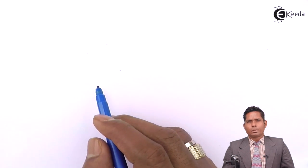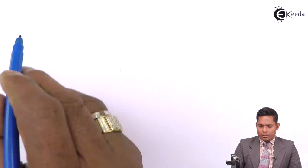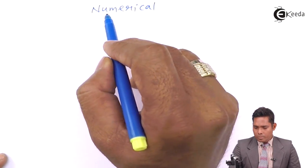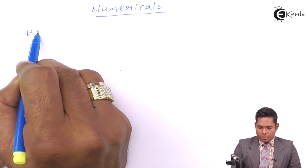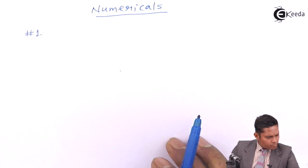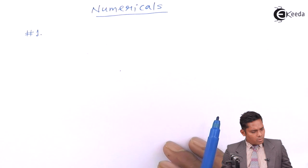Friends, we'll solve some numericals based on this chapter. This is numerical number one. I will just read the question for you. The water tank has a hole at a distance x from the free water surface. If the radius of the hole is 2mm and the velocity of efflux of water is 11m/s, then find x.